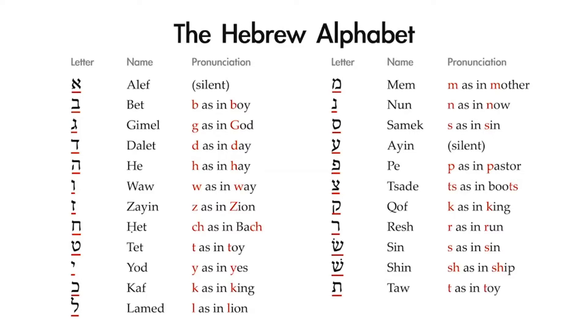Those are the 23 letters or consonants of the Hebrew alphabet. You'll need to memorize the form, the name, and the pronunciation for each letter. At the end of this lecture, we'll go over how to write or produce each of these forms written out by hand.